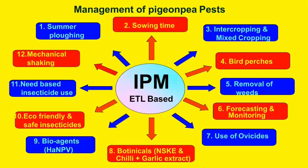Some IPM tactics to use in toor crop to reduce pest infestation include: summer ploughing, adjusting sowing time, intercropping and mixed cropping, use of bird perches, removal of weeds, forecasting and monitoring, use of pheromone chemicals, use of botanicals like NSKE and chili-garlic extract, use of HaNPV for Helicoverpa armigera, selective insecticides, need-based insecticide use and mechanical checking of the plant.